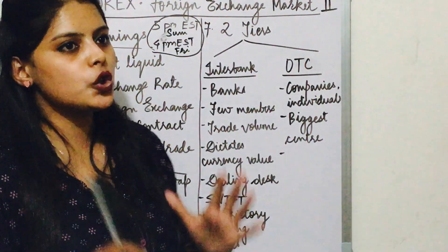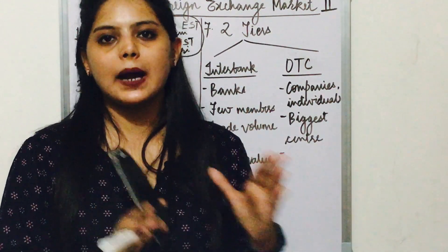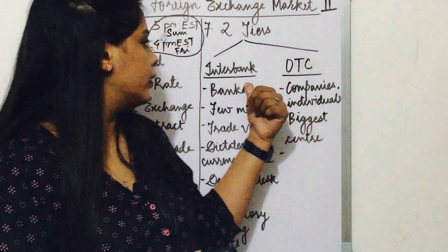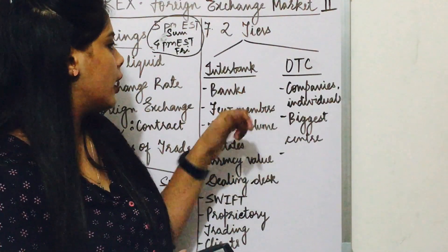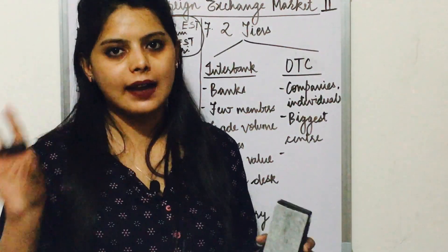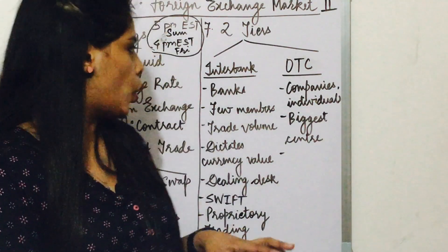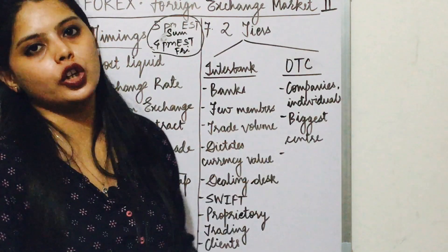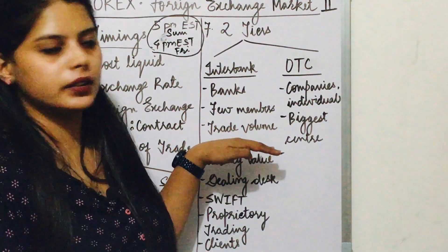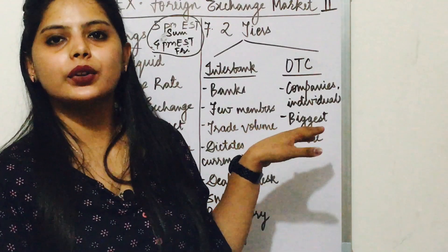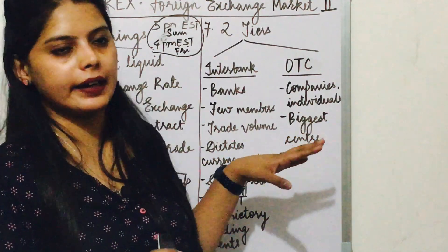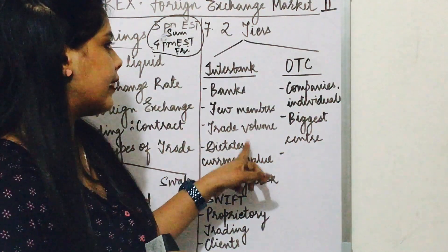First is interbank. Interbank trading involves the biggest banks of different countries — they trade through this tier. There are very few members, as big banks across entire countries are limited, but the trade volume is very high. They are mostly trading under 10 million to 100 million. The currency market prices are mostly determined by these interbank trade volumes, and that is why the currency value is dictated by interbank trading.